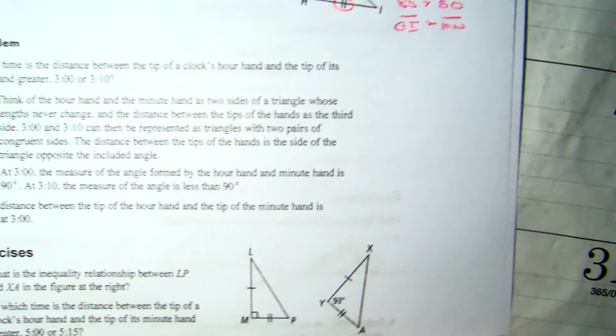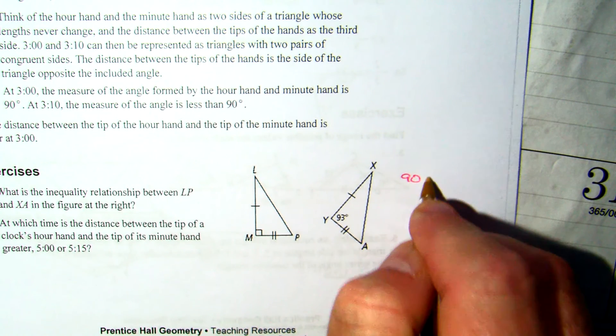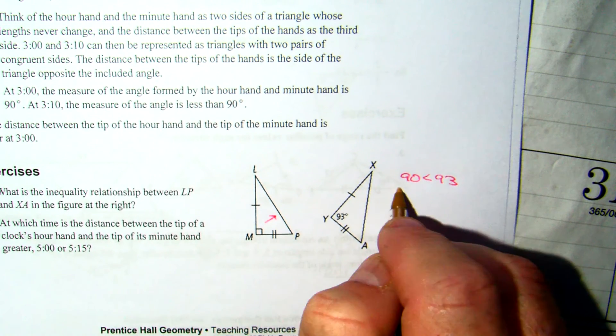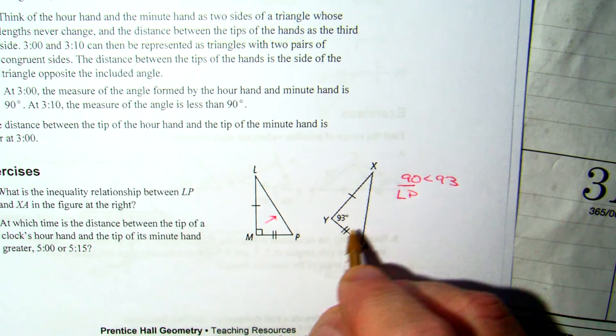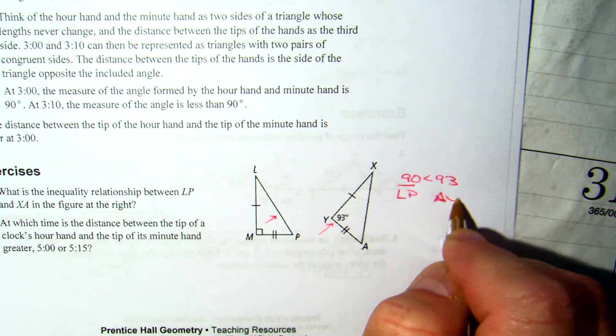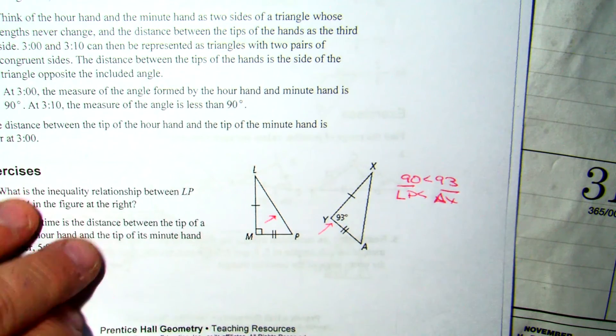We come down to the bottom. We ask ourselves, what's bigger? 90 or 93? We would say 90 is less than 93. Opposite 90 is LP. Opposite the 93 is AX. So we could say LP is less than AX or AX is greater than LP.